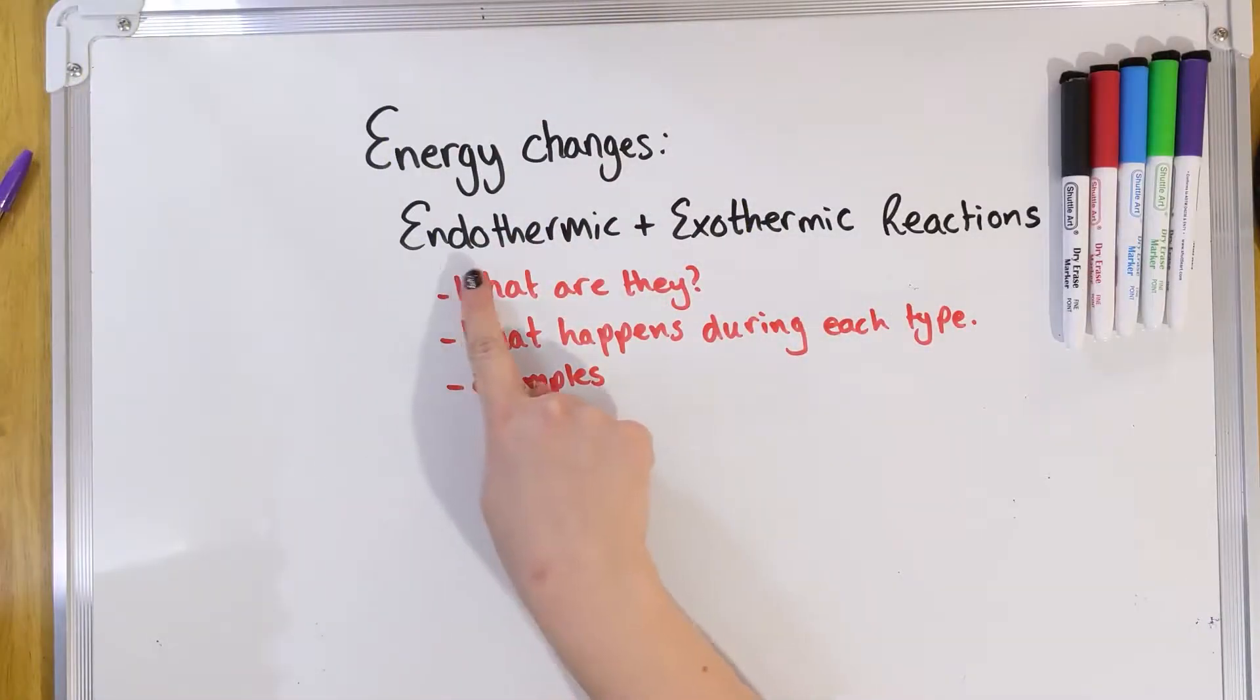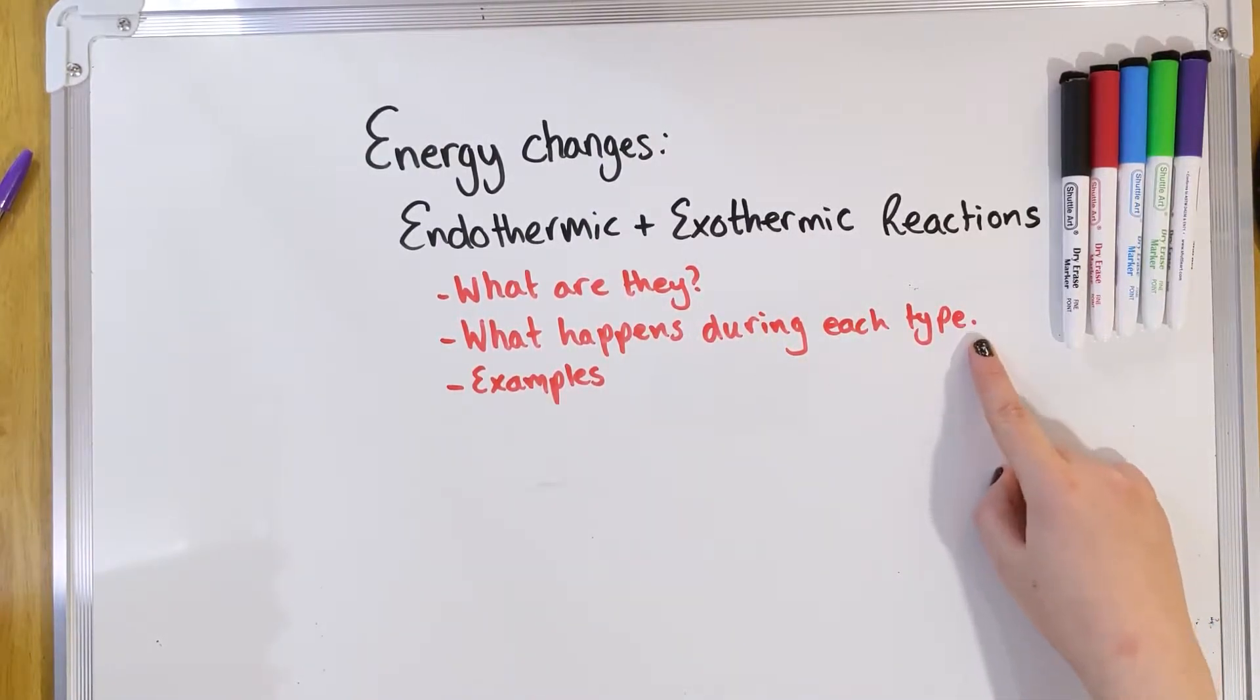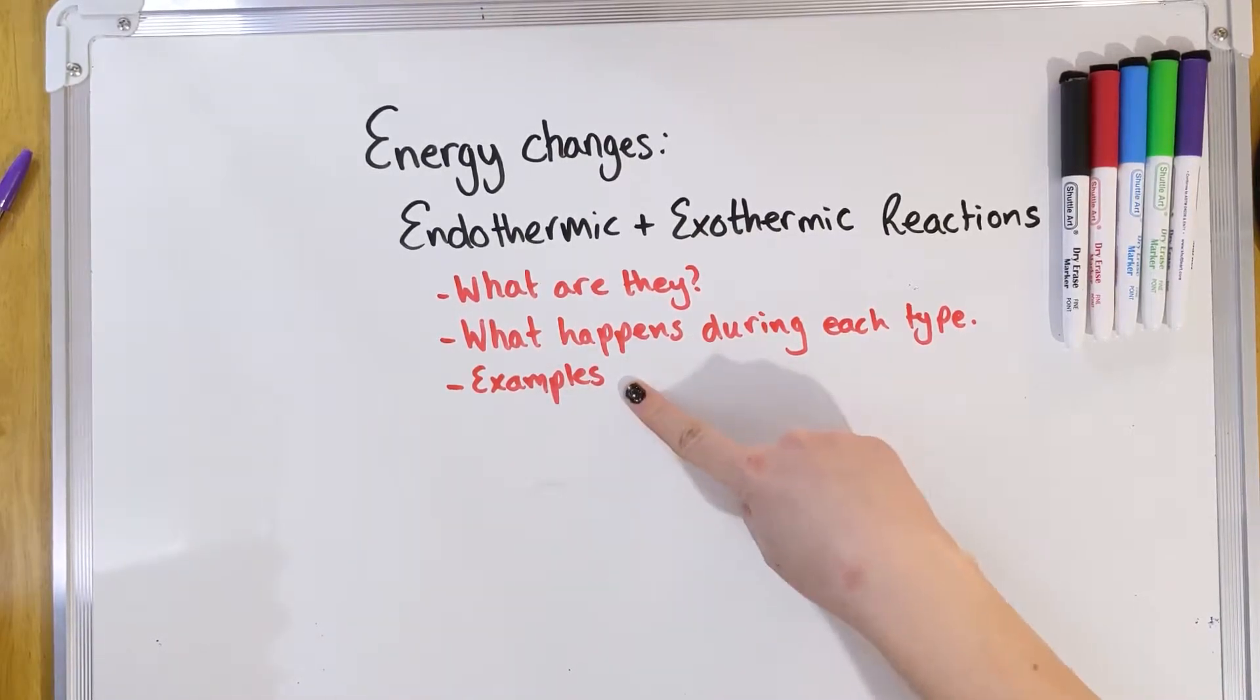Hi everyone, we're going to be carrying on with the energy changes topic today that we started yesterday. What we're going to be looking at today is endothermic and exothermic reactions, what they are, what happens during each type, looking at the particles within and some examples of each. So grab yourself a paper, grab yourself some pens and follow along with me.